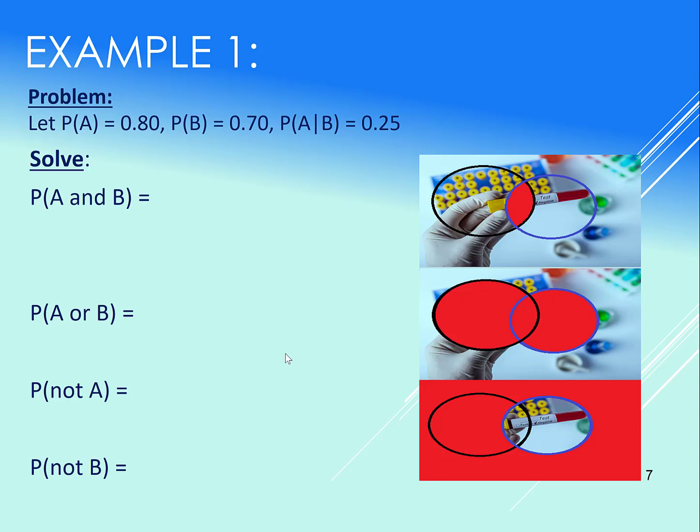Now let's look at an example here. So for example, probability of A is 0.8, probability of B is 0.7, probability of A given B is 0.25. We're going to get all of these probabilities here.